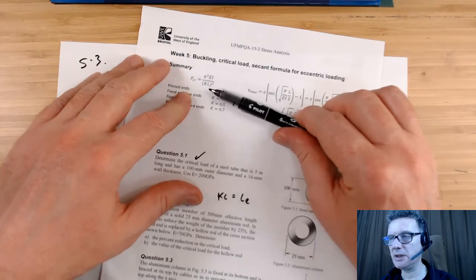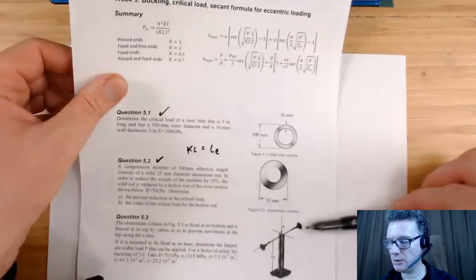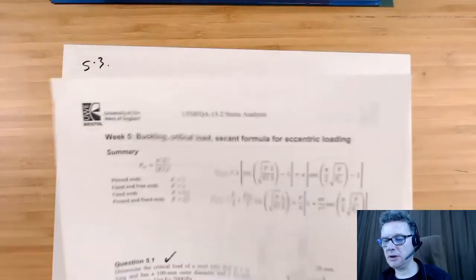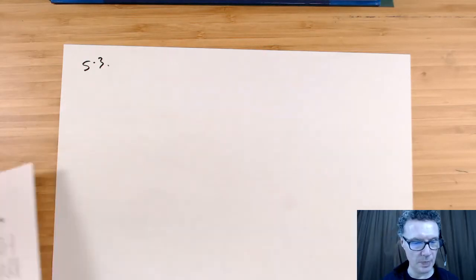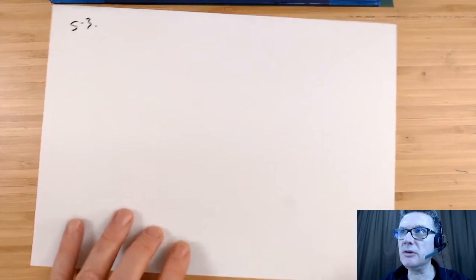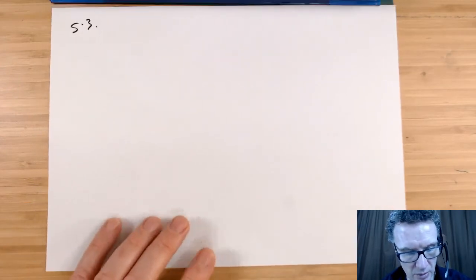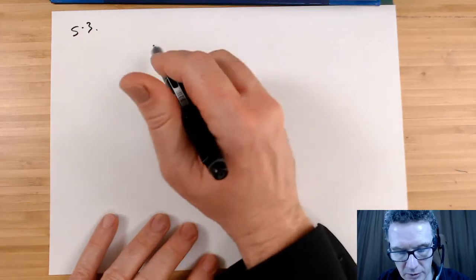So is the better I, second moment of area, or is the way that it's being held at the top, which is going to give us the lower buckling condition? So what we want to do first I think is work out we've got the eyes. So from above...